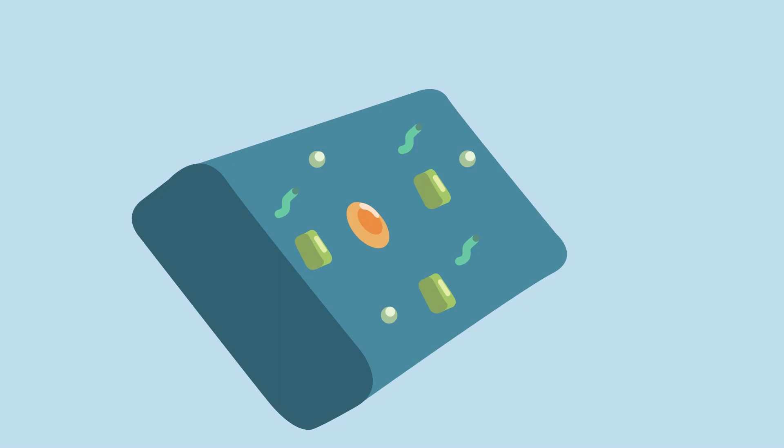Here we see a stem cell niche or a microenvironment, and in this niche we see these supporting cells in green. These supporting cells send out signaling molecules that the stem cells respond to.